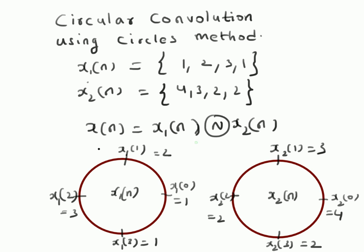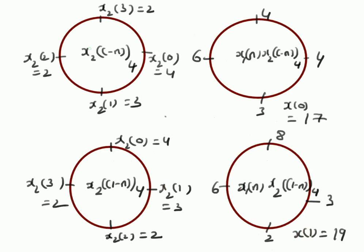To summarize, we have used the circles method to find the circular convolution of two four-point sequences. The main idea is to represent numbers on circles in anti-clockwise direction. To perform the convolution, we first write x2(n) as x2(-n mod 4) — reversing the sequence with mod 4 so numbers go clockwise — then multiply to get products, and sum them for x(0). For the next values, we shift x2(-n mod 4) one step at a time.